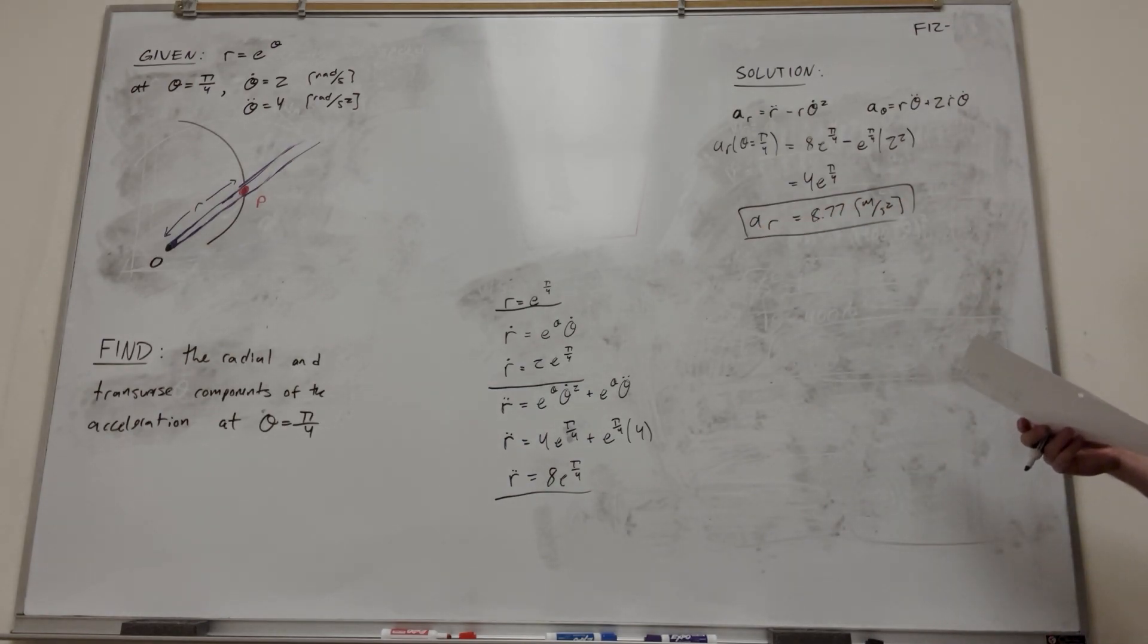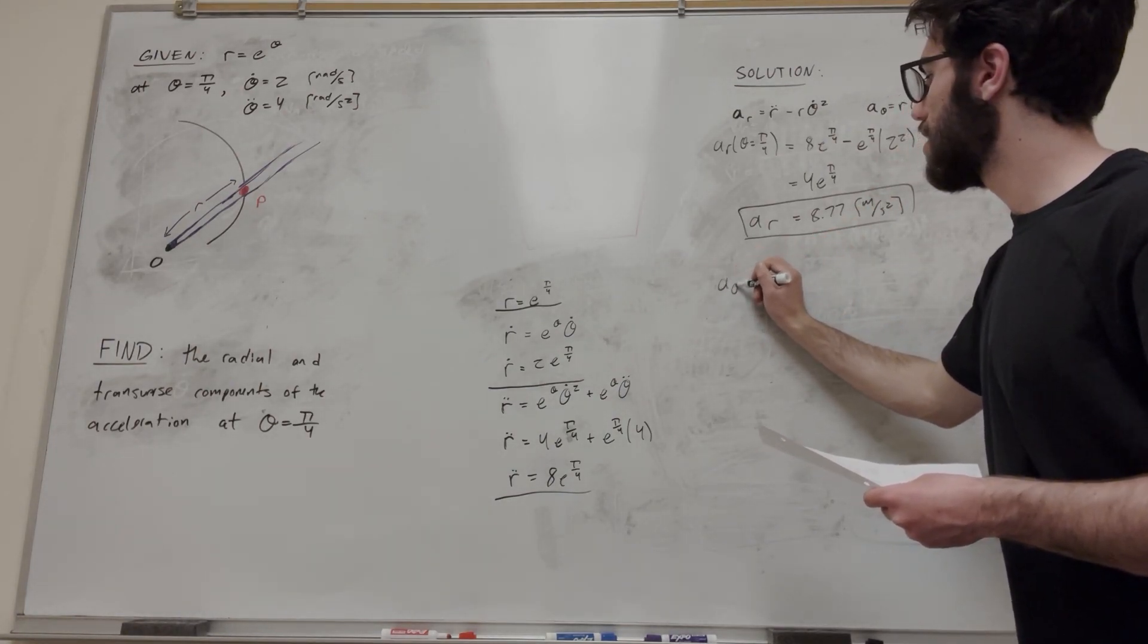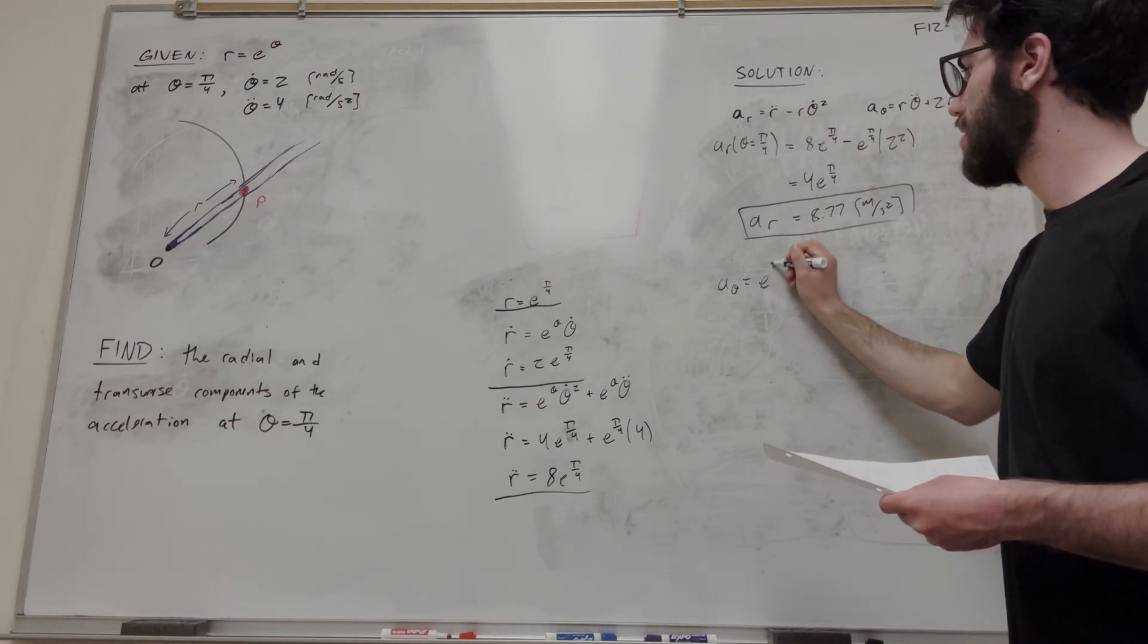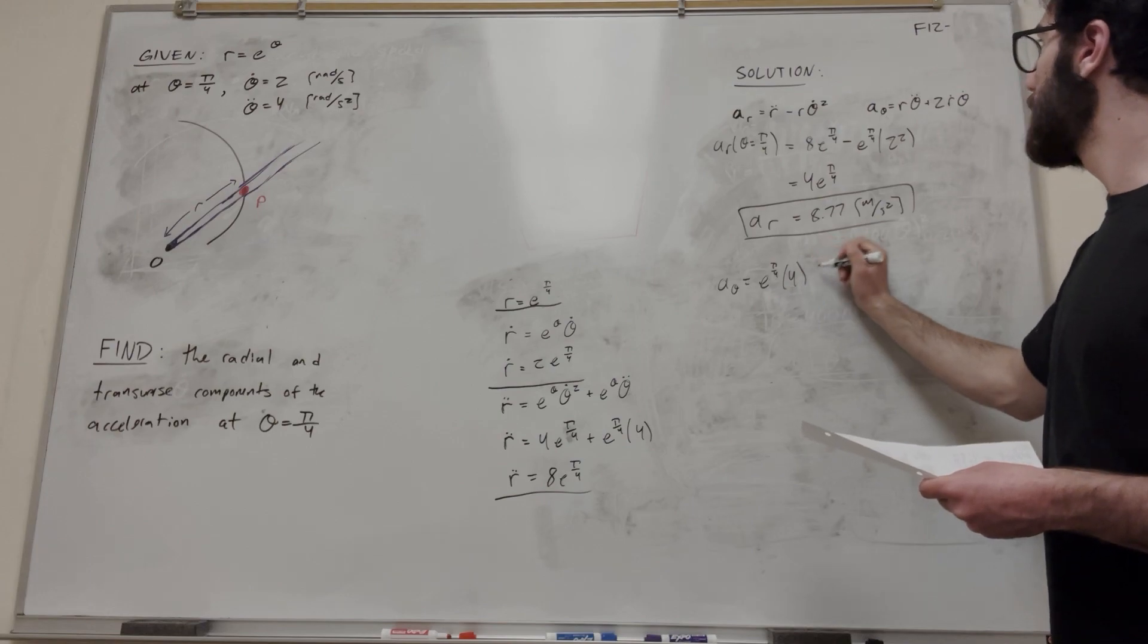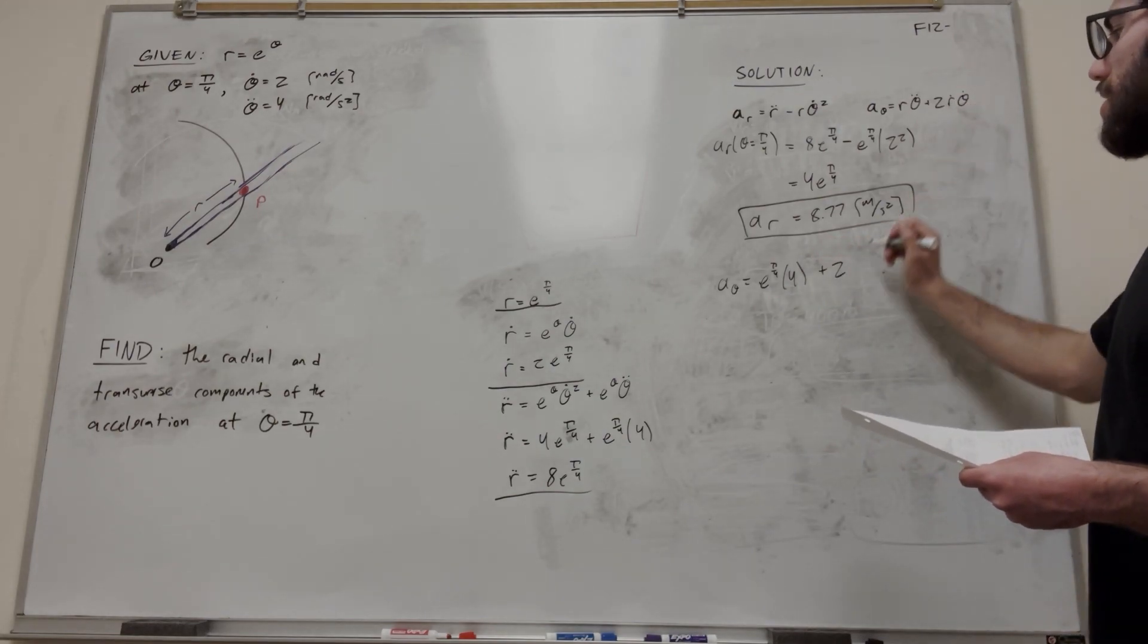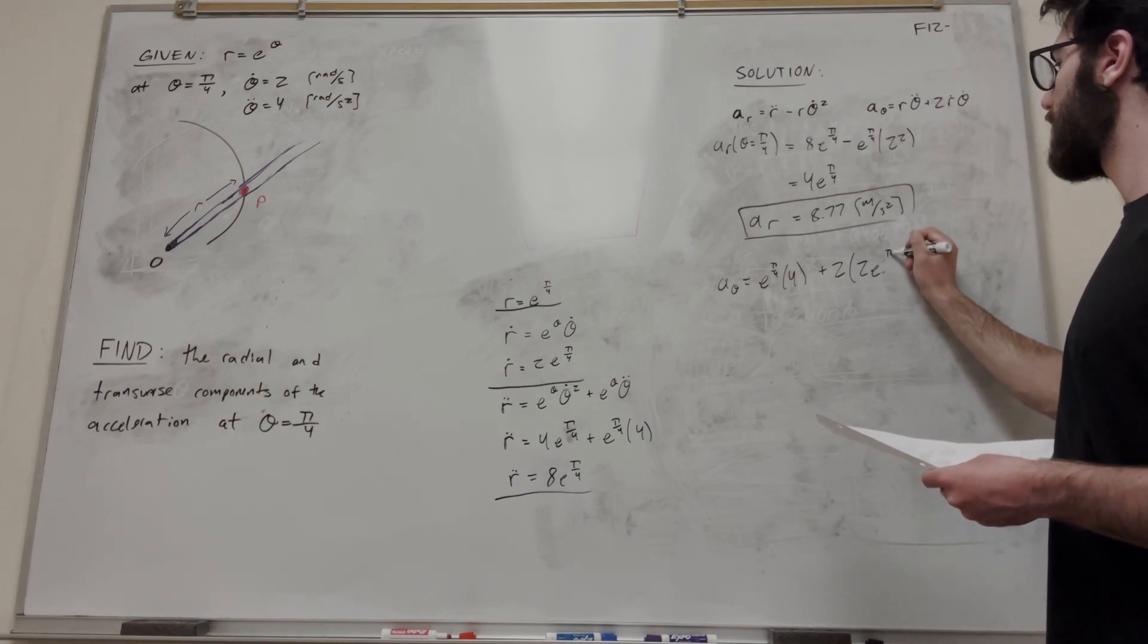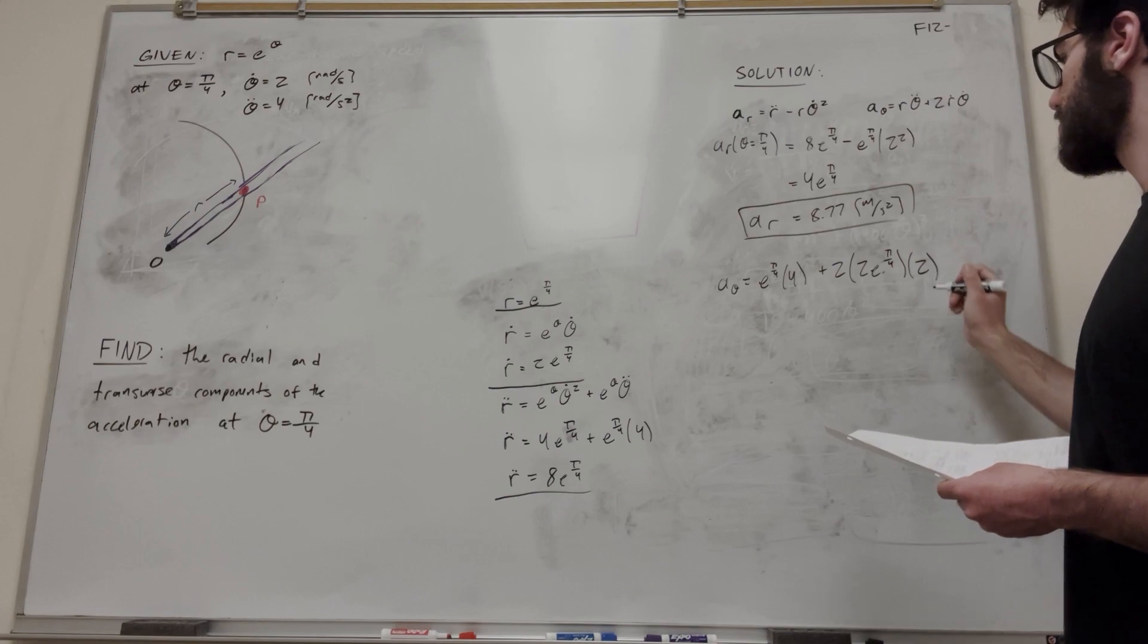Now let's solve the radial component. So radial component, let's go use this equation. So it's r, which we found to be e to the pi over 4, times theta double dot, which is 4, plus 2 single r dot, so 2 e to the pi over 4 times theta dot, which is 2.